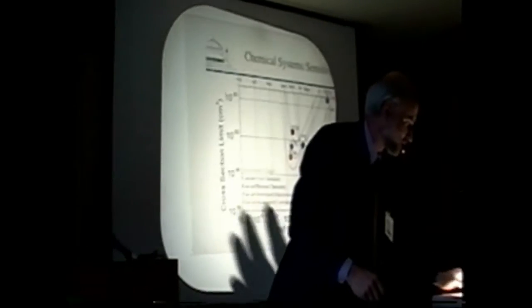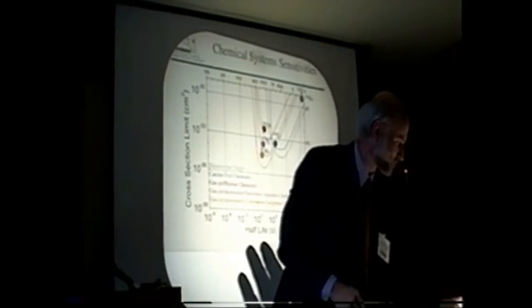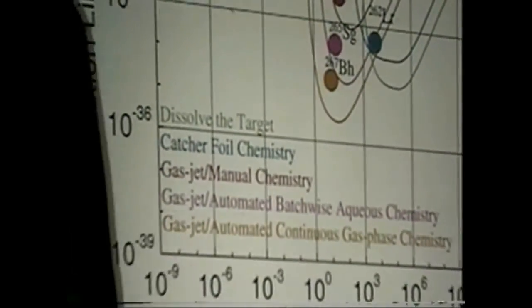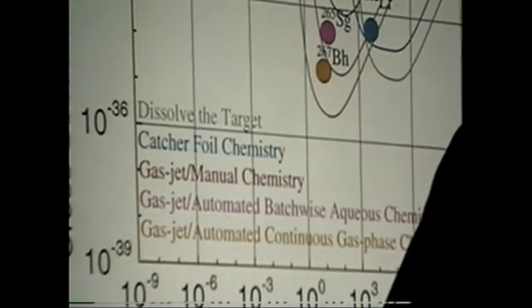Matthias already showed some of these cross-section versus half-life sensitivity plots. Now I want to talk about the sensitivity of different chemical systems. I have five curves on here with a representative experiment from each.